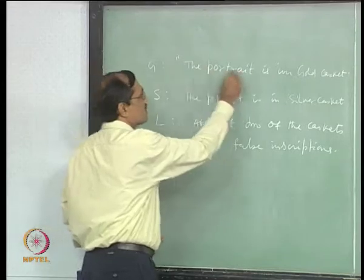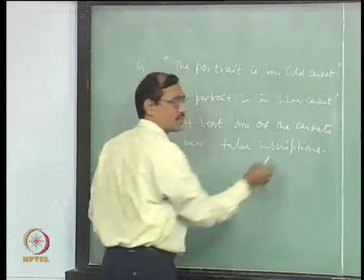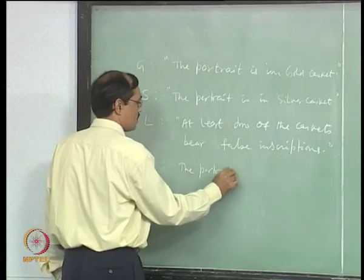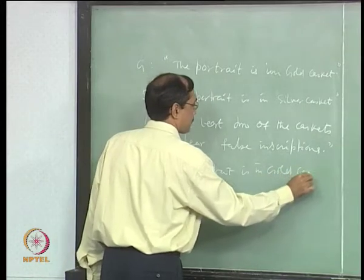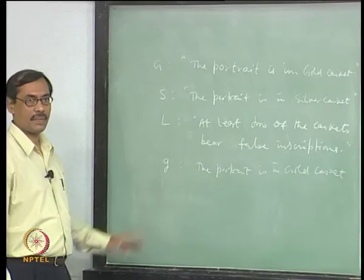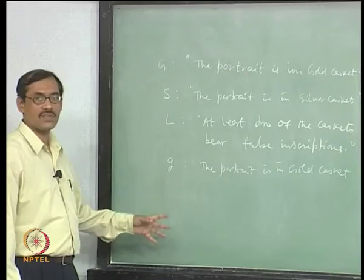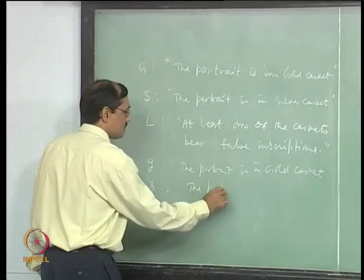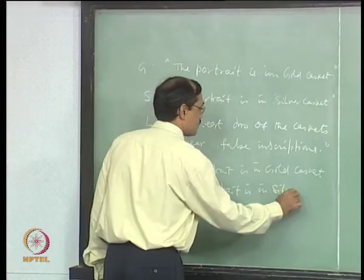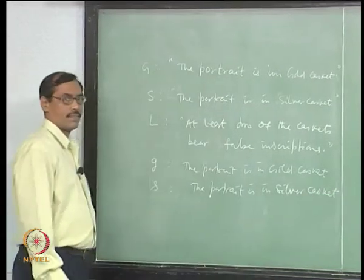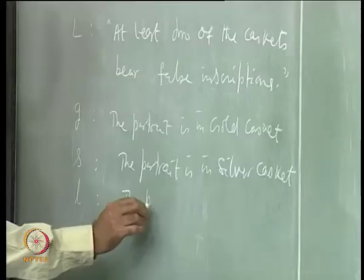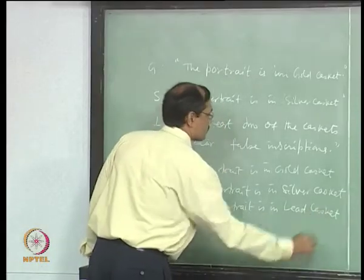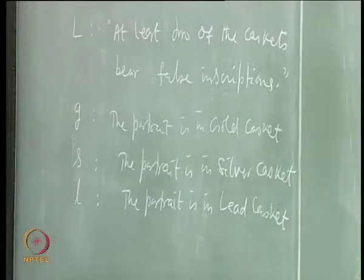So capital G is the inscription itself written on the gold casket. Small g will be 'the portrait is in the gold casket'. Capital G is for the inscription written on the gold casket; small g is for the portrait being in the gold casket. Small s for the portrait is in the silver casket. Small l for the portrait is in the lead casket. Now these are all propositional variables.